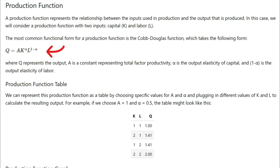We are going to focus on a specific type of production function called the Cobb-Douglas function. The Cobb-Douglas function takes the form Q equals A times K to the power of alpha times L to the power of 1 minus alpha, where Q represents the output, A is the constant representing total factor productivity, alpha is the output elasticity of capital, and 1 minus alpha is the output elasticity of labor.